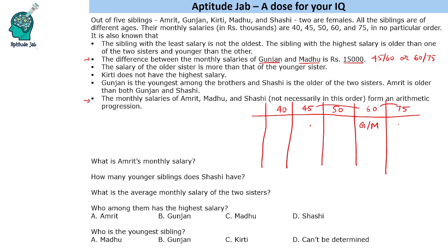The next clue says the monthly salaries of Amrit, Madhu and Sashi form an arithmetic progression in any order. What are the AP possibilities from our salary values? One is 40, 45, 50 with a gap of 5. Another is 40, 50, 60. And a third is 45, 60, 75. So we have three possible arithmetic progressions to test.